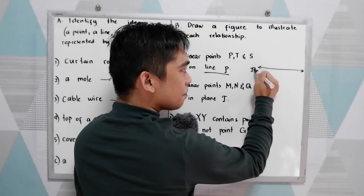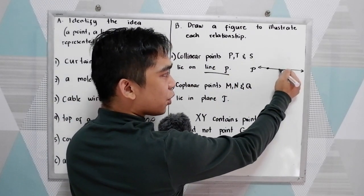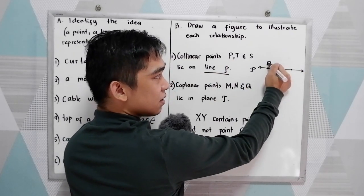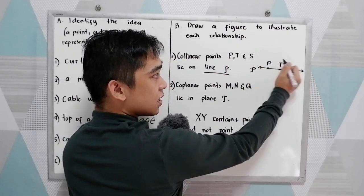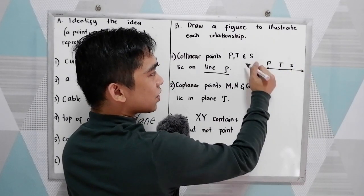This is a line P. And we have collinear points. We have three points. We will name it as P, T, and S. So this will be your answer.